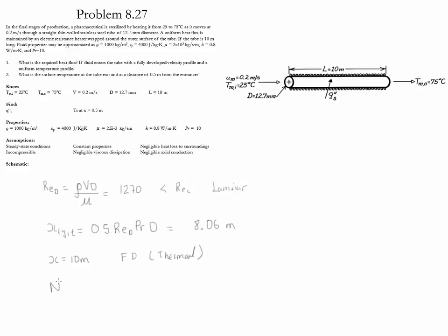For the fully developed region with uniform heat flux, the Nusselt number is 4.36. Since Nu = h·D/k, the convection coefficient h is equal to 274.6 watts per meter squared per kelvin. Using the surface temperature relation T_s = T_m + q''/h, the surface temperature at the outlet is 101.1 Celsius.